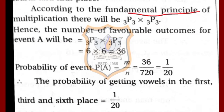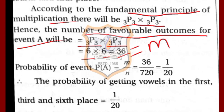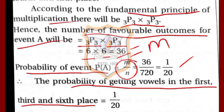According to the principle of multiplication, the arrangement can be done in 3P3 × 3P3 ways. So the number of favorable outcomes M = 3P3 × 3P3. Since 3P3 = 6, M = 6 × 6 = 36. Probability is M upon N, so probability = 36/720 = 1/20. The probability of getting vowels in the first, third and sixth place is 1/20.